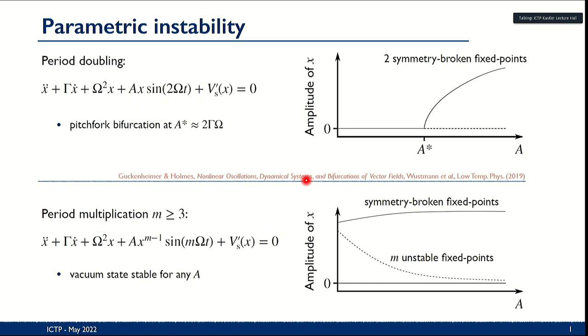However, if the amplitude of the drive is large enough, the M unstable fixed points that exist in the system will come closer to the vacuum state and the valley of stability around the vacuum state will become smaller. Today I want to talk about how quantum fluctuations can then induce a transition to the symmetry broken fixed points. For the period doubling case, quantum fluctuations wash out the instability transition and we can see photon emission below the threshold. Here in the case of period multiplication, they are actually necessary to even induce a symmetry breaking transition.